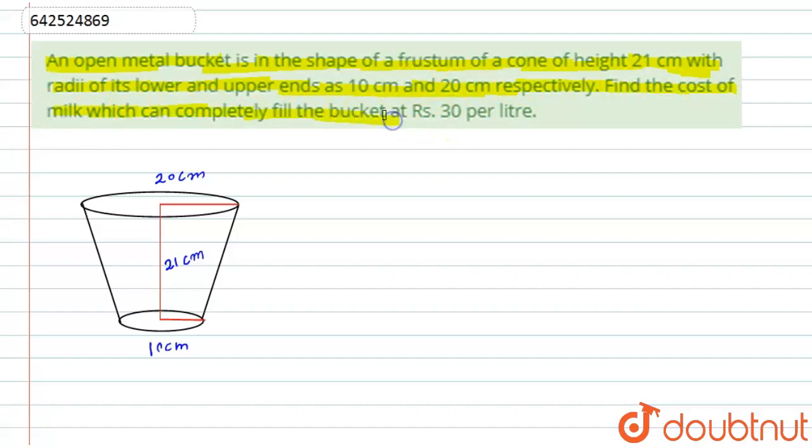If I will try to draw the diagram as per the given question, so this is nothing but a bucket which is in the shape of frustum of cone whose height is 21 centimeter, upper radius is 20 centimeter, and lower radius is 10 centimeter.